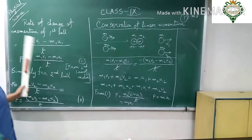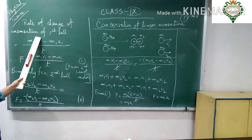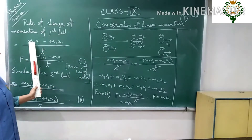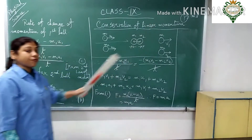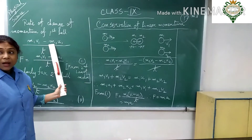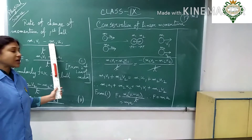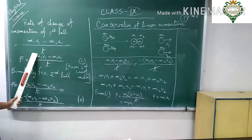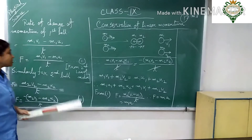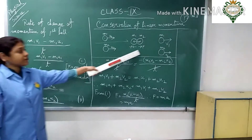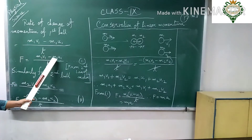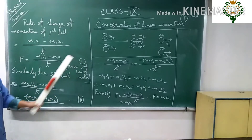Now, the rate of change of momentum of the first ball: that is M1·V1 (momentum after collision) minus M1·U1 (momentum before collision), divided by T. Since the rate of change of momentum equals force, we can write F is equal to M1·V1 minus M1·U1 divided by T. This is equation number one.